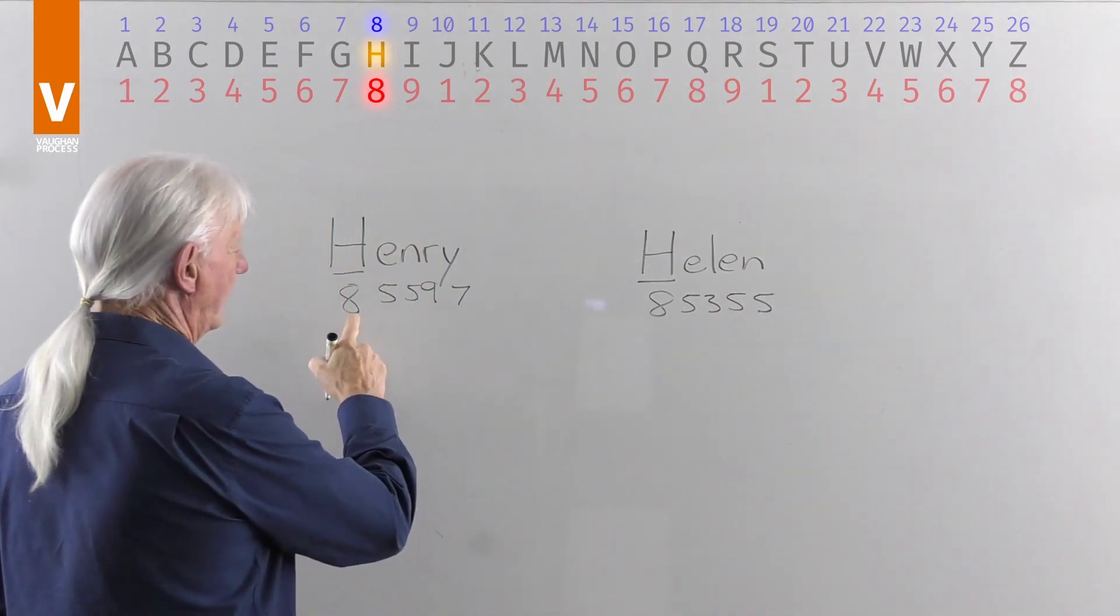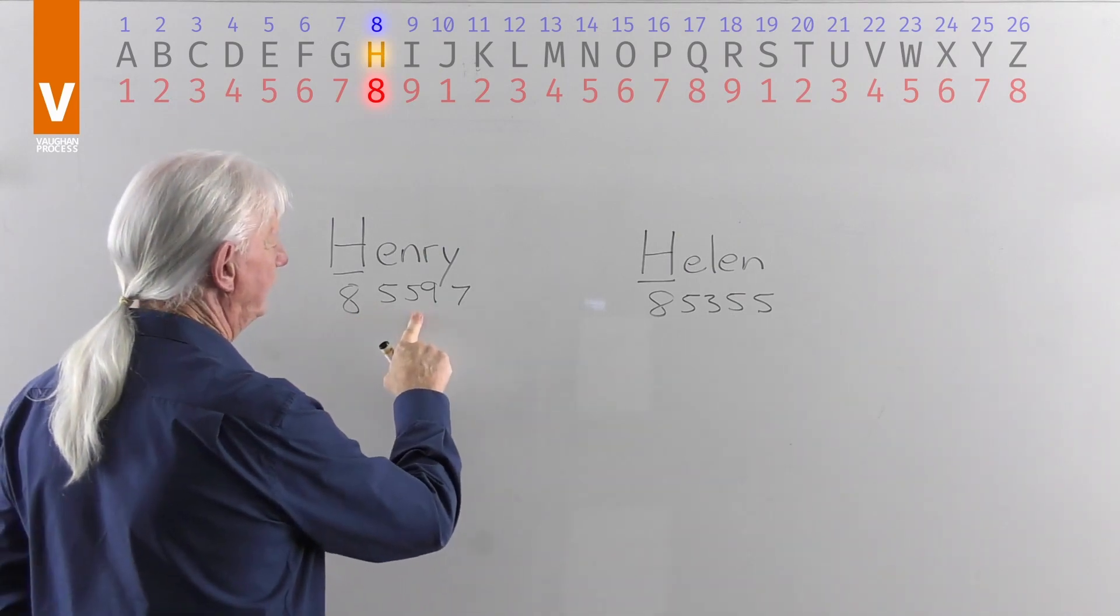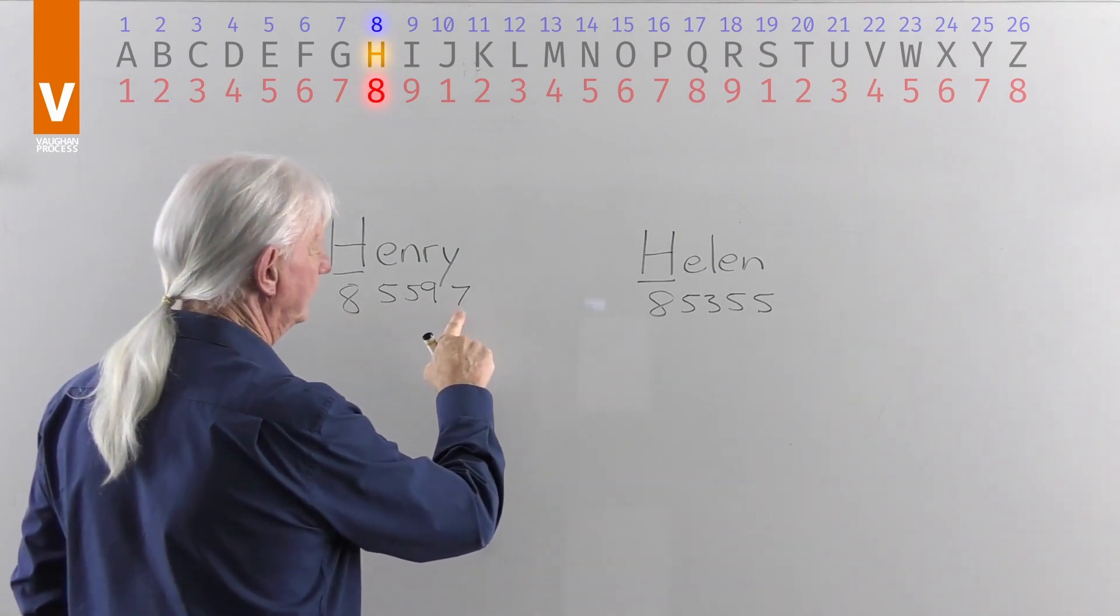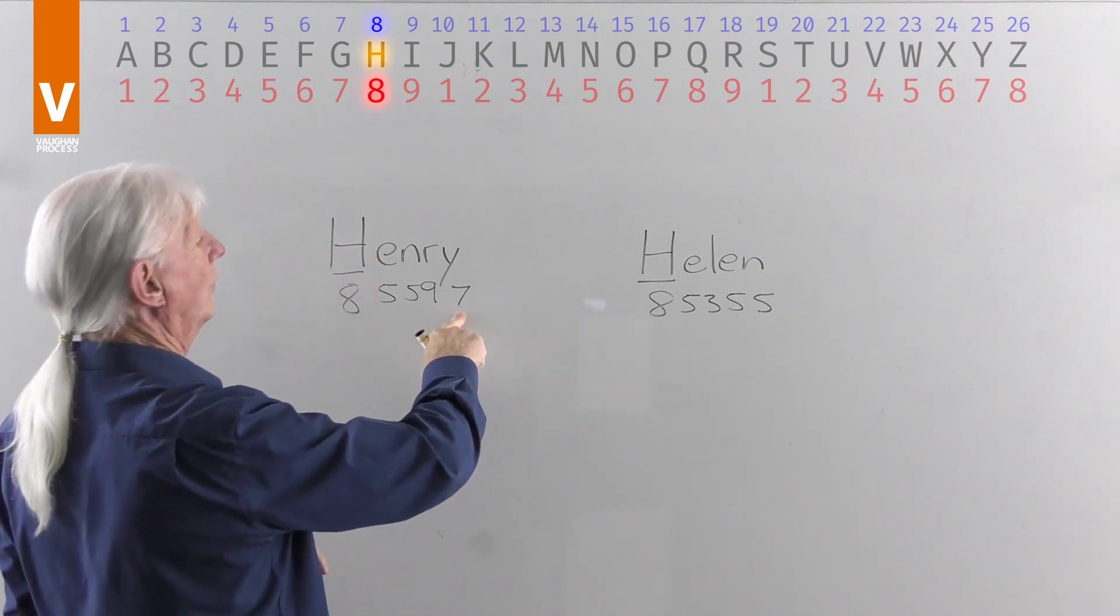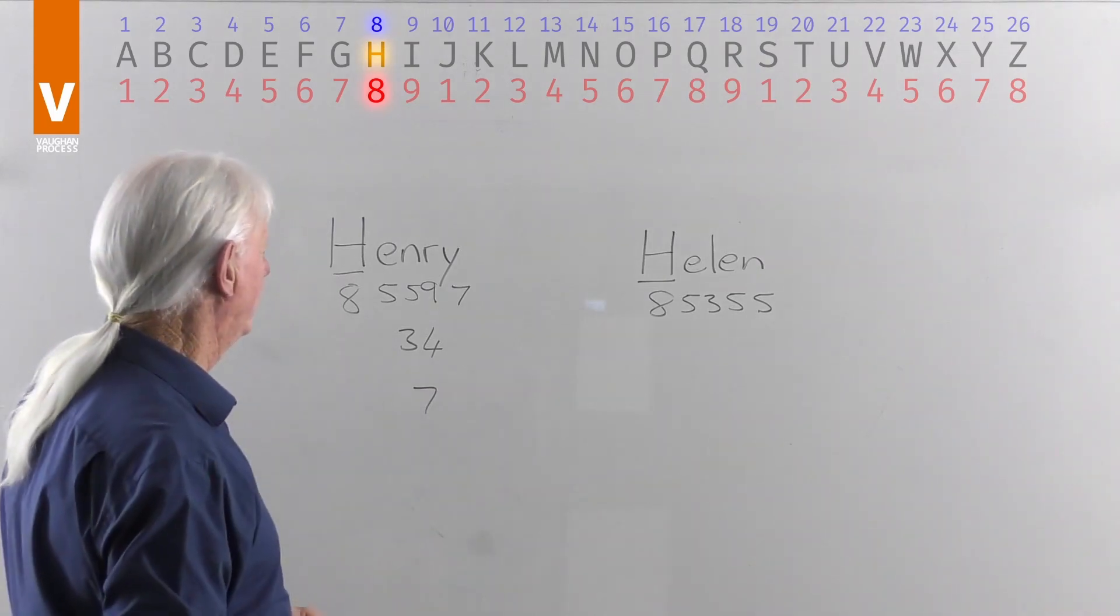7, 8, 8 and 10 is 18, and 9 is 27, and 7 is 34. 3 and 4 equals 7.